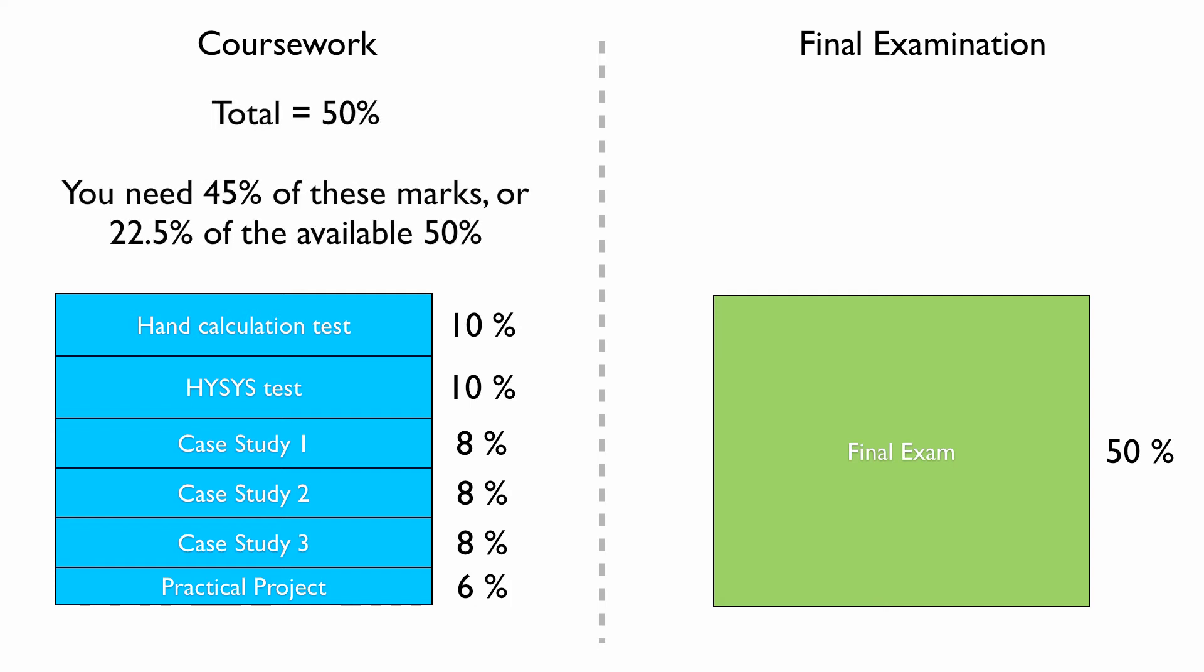The total of the coursework is 50%. According to the hurdle requirement in this unit, you need to get at least 45% of those marks, which equates to 22.5% of the available 50%. You do not need to get 45% out of 50% to pass the unit. You need to get a minimum of 22.5% out of 50%.